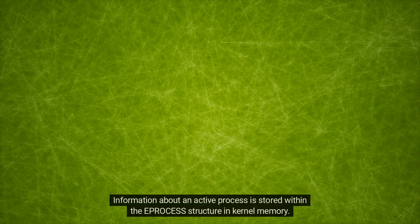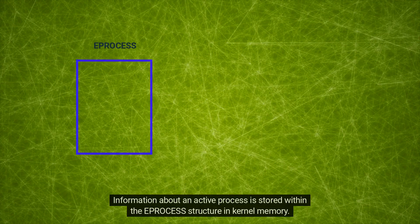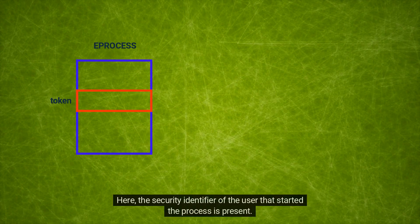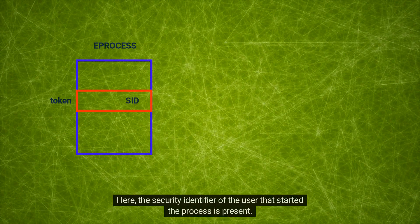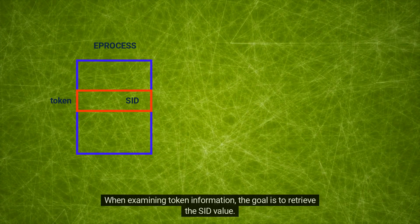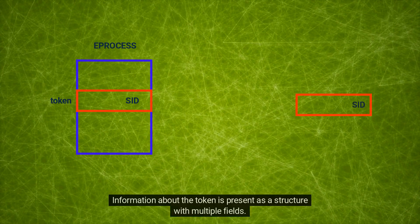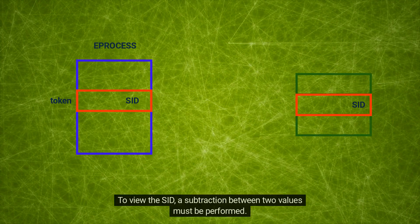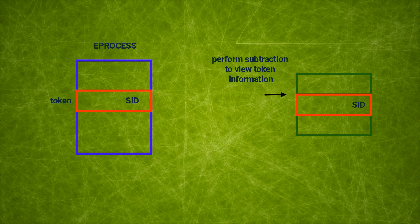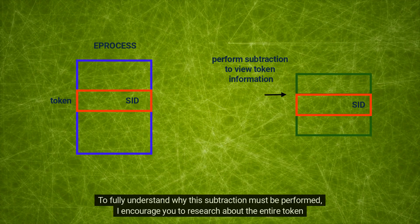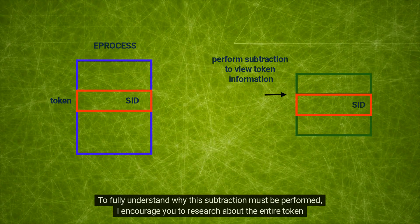How can this token be examined? Let's start with some background information. Information about an active process is stored within the EPROCESS structure in kernel memory. This structure has a field containing token information, where the security identifier of the user that started the process is present. When examining token information, the goal is to retrieve the SID value. Information about the token is present as a structure with multiple fields. To view the SID, a subtraction between two values must be performed. I will demonstrate this using Windows Debugger. To fully understand why this subtraction must be performed, I encourage you to research the entire token structure.